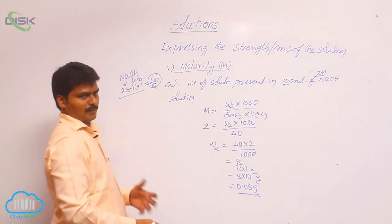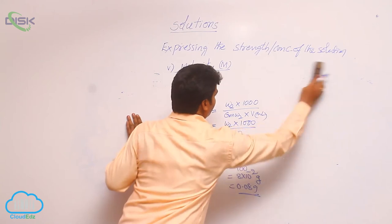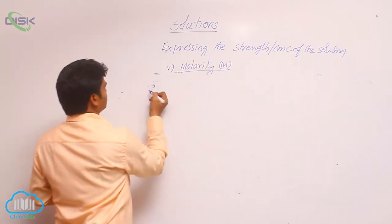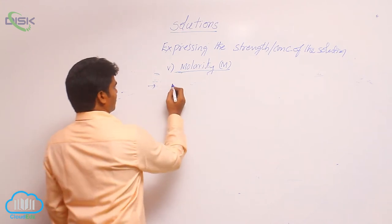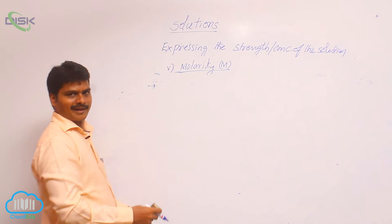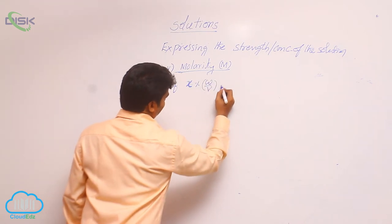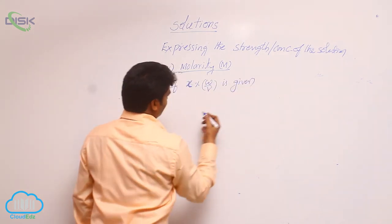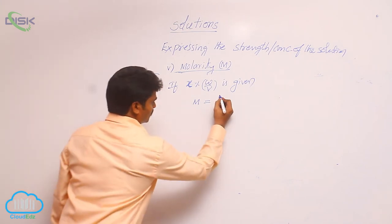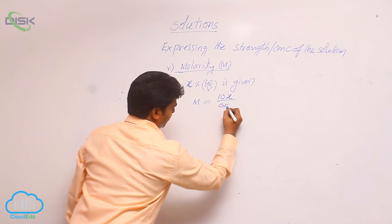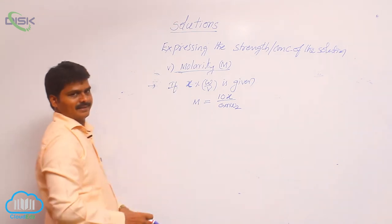In that way, a problem will be given. Next, let us see different formulae used in the molarity concept. Sometimes, weight of solute and volume of solution are not given directly — it is given as x percentage w/v. Then how to calculate molarity? The shortcut formula used in JEE Mains is: M = 10x divided by gram molecular weight of solute. This is the formula we use to calculate molarity directly from the percentage given.